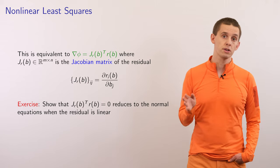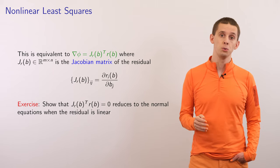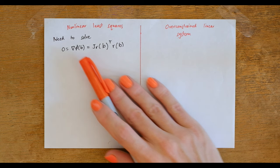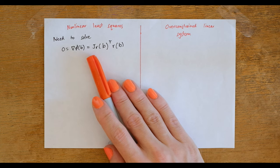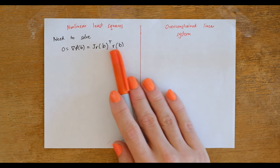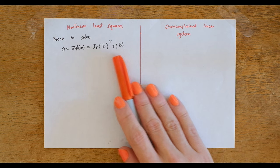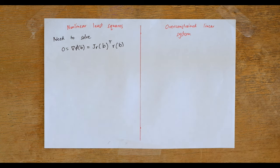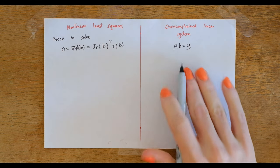We can actually see that if we're dealing with a linear least squares problem, this expression actually reduces to the normal equations. So we've shown that for nonlinear least squares problems we need to find the minimum of phi of b, which means finding places where the gradient of phi equals zero, expressed as the Jacobian of the residual transpose multiplied by the residual. We'll now look at what this equation would be in the special case of an over-constrained linear system solved using linear least squares methods.